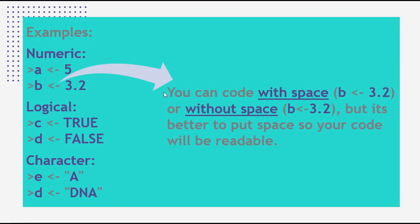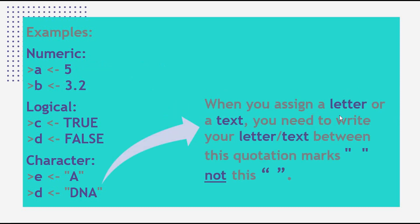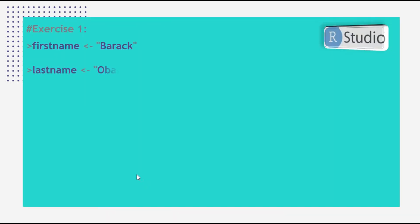A tip: you can code with spaces or without spaces, but it is better to put spaces in your code so you can read it when you come back to it after a long time. Also, when you assign a letter or text, you need to write it between quotation marks — use the correct straight quotation mark, not a curly one.